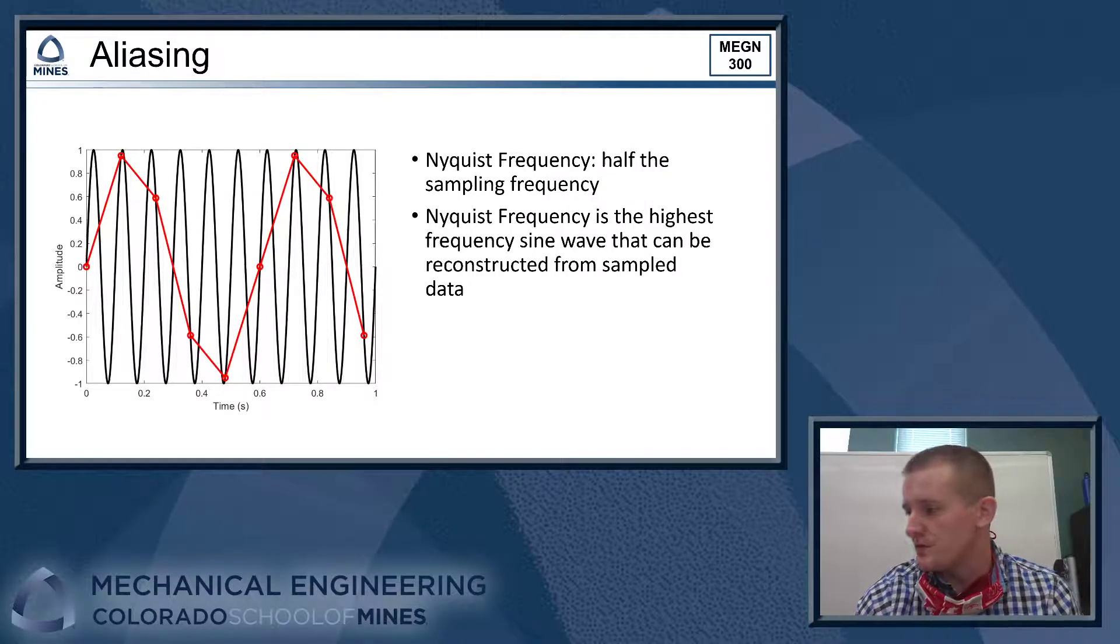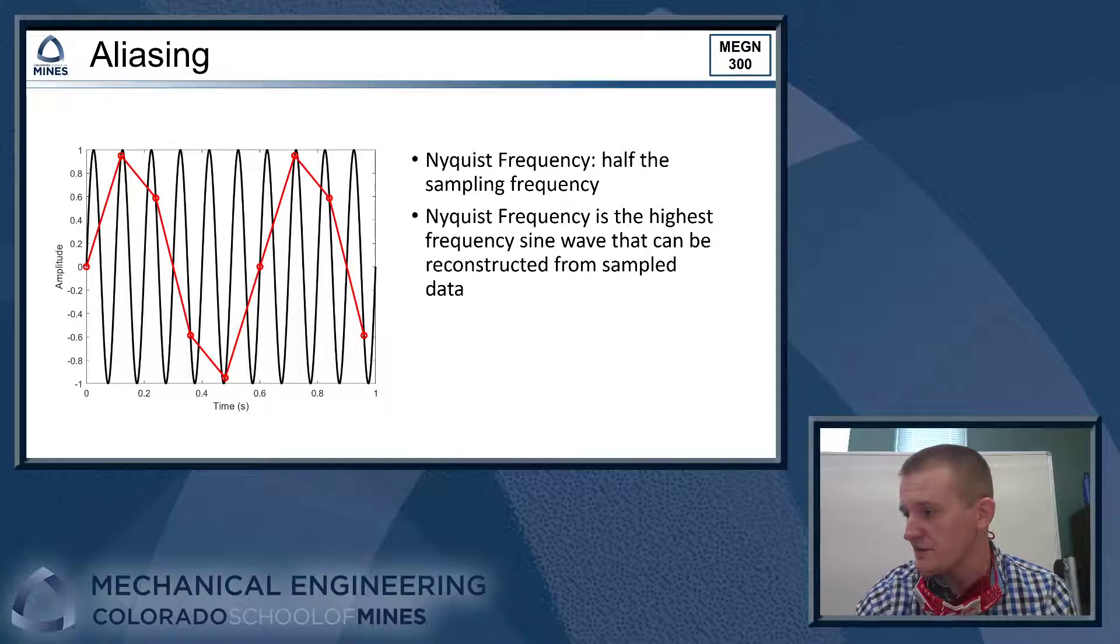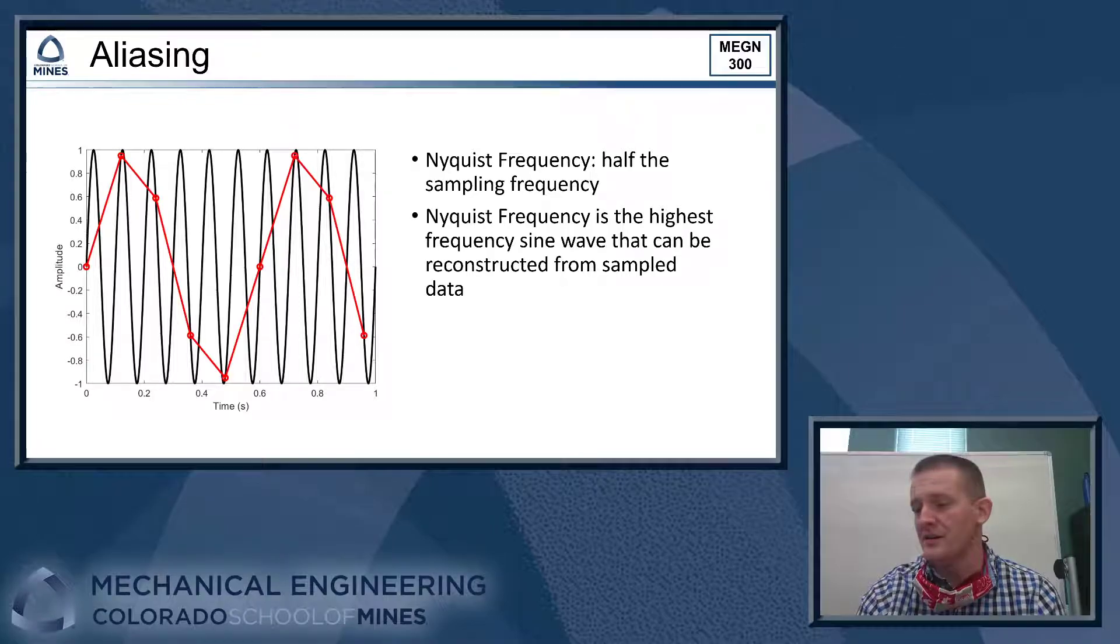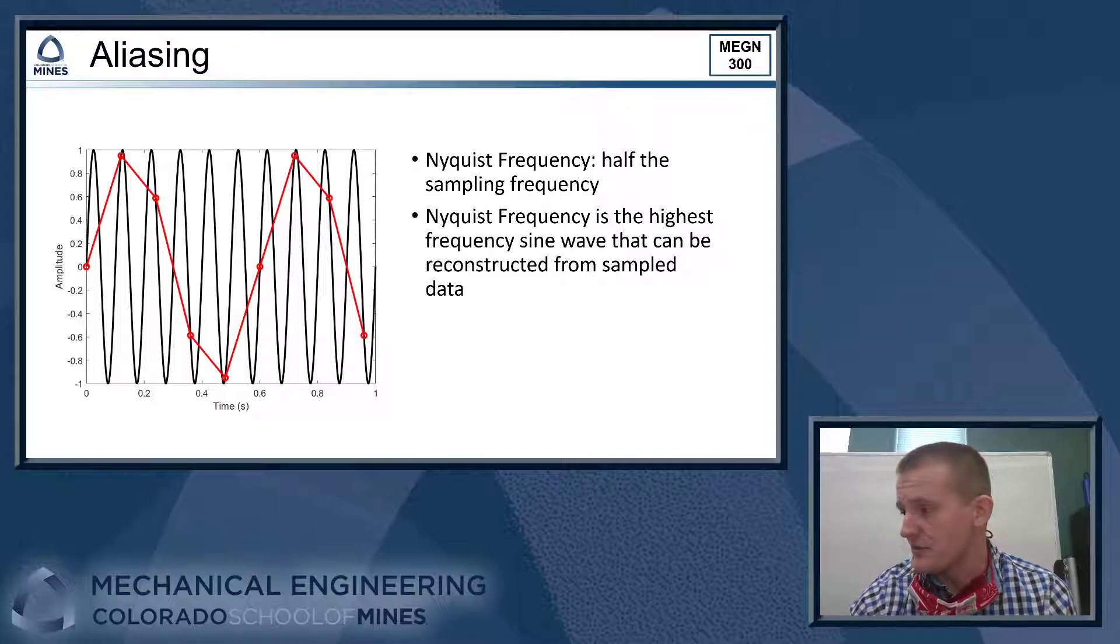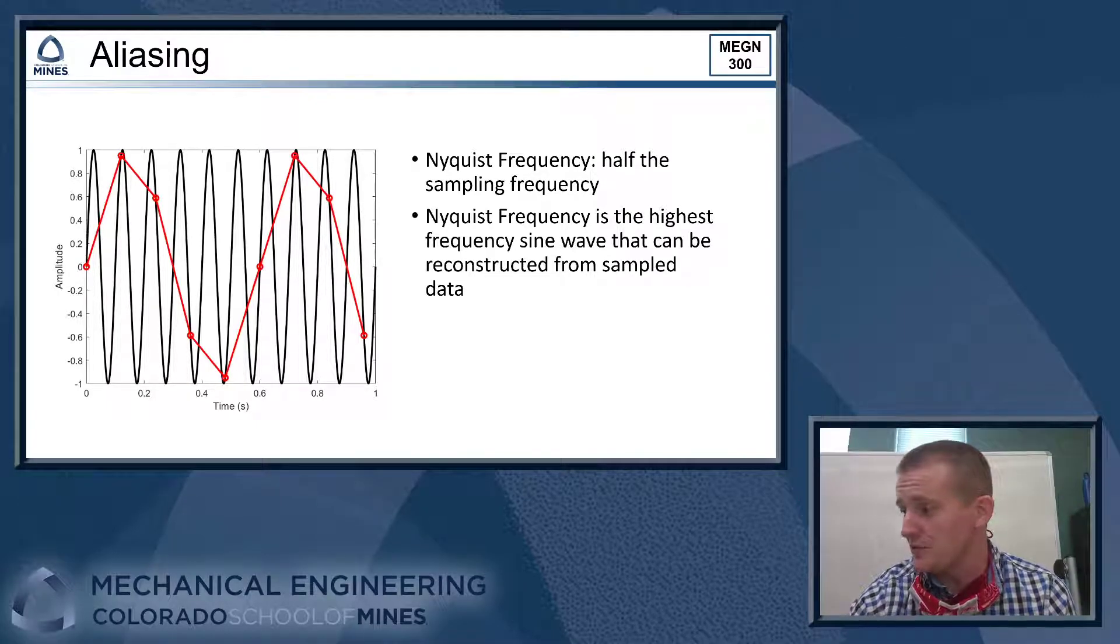So this half of our sampling frequency, we call the Nyquist frequency, and it's the highest frequency signal component that we can reconstruct from our sample data. So if you have your DAC set to collect data at 1,000 samples per second, so 1,000 hertz sample rate, the highest frequency signal that you will ever be able to see with those settings is 500 hertz. Because that's half your sample rate. You can't see anything higher than that.